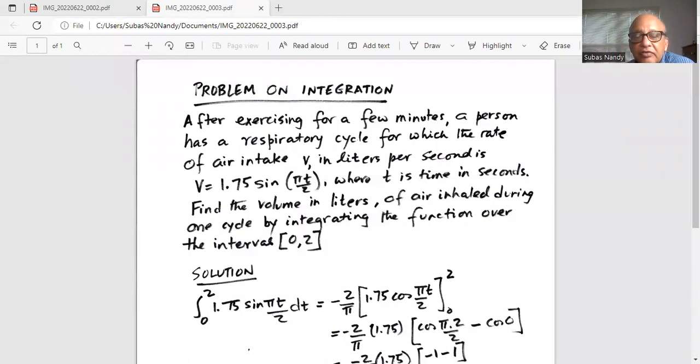Problem on integration. After exercising for a few minutes, a person has a respiratory cycle for which the rate of air intake V in liters per second is given as V equal to 1.75 times sine pi times t over 2, where t is the time in seconds. Find the volume in liters of air inhaled during one cycle by integrating the function over the interval 0 to 2.